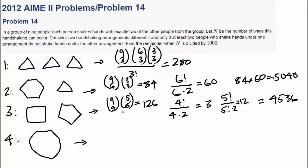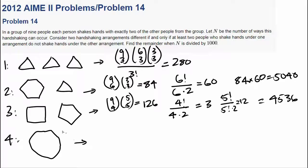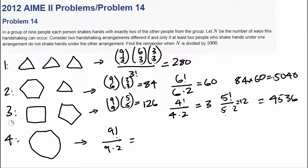For the final case, we don't have to worry about choosing because we just use all nine people. So we go directly to the number of ways to arrange nine people within one ring. That's 9 factorial divided by 9 rotations times 2 reflections, and that is equal to 2,160.